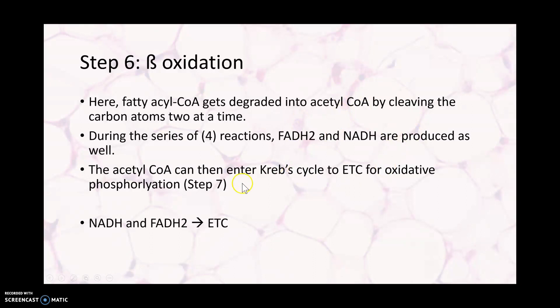What I want you to know about beta oxidation is that these fatty acyl-CoA molecules are being degraded through a series of reactions into acetyl-CoA. Just like with aerobic glycolysis, where we convert pyruvate to acetyl-CoA and enter Krebs, we spin around Krebs and produce NADH and FADH2, which are sent to the electron transport chain to produce ATP. A fat molecule and a glucose molecule ultimately have the same end result — reduction to acetyl-CoA, NADH, and FADH2 — and then the same processes follow.